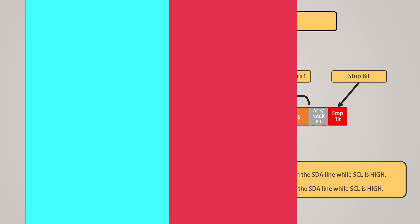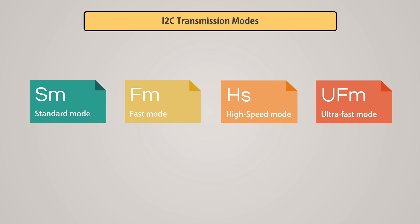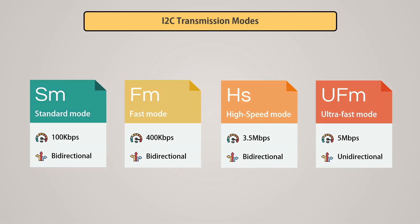There are four types of transmission modes in the I2C protocol: standard mode, fast mode, high-speed mode, and ultra-fast mode. In standard mode, the SCL frequency is limited to 100 kHz and the data transfer rate is typically around 100 kbps — suitable for low-speed applications and long-distance communication. There is also an ultra-fast mode with data transfer rates of up to 5 megabits per second, but in this mode data transfer is only unidirectional. Not all I2C devices support fast mode or high-speed mode; the maximum SCL frequency depends on the specific device and bus capabilities.